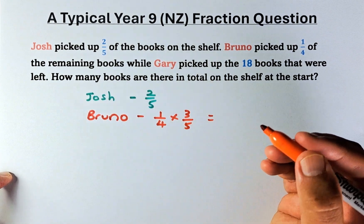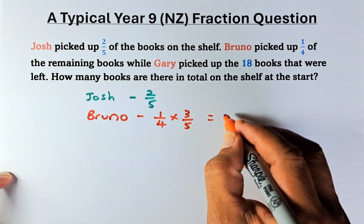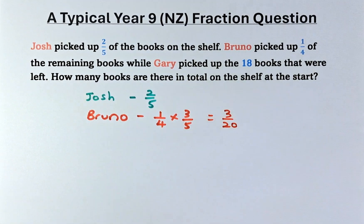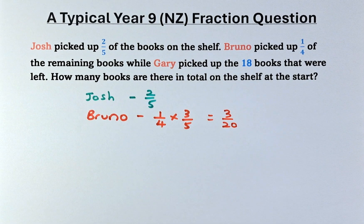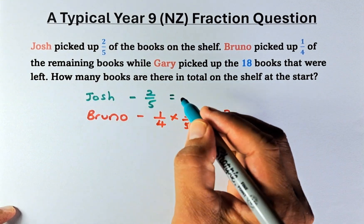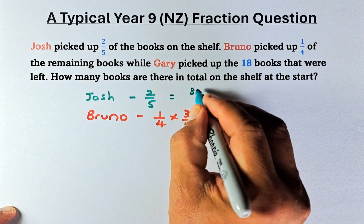And if you know your fraction, one-quarter times three-fifths is going to be three over twenty of the books. So if Bruno pick up three-twenty, we are going to convert Josh's number in terms of denominator of twenty. So two-fifths is also the same as eight over twenty.